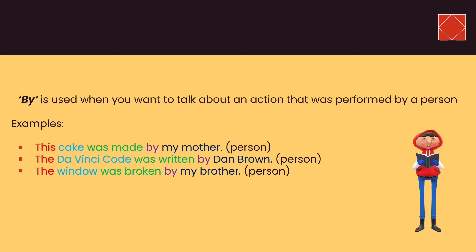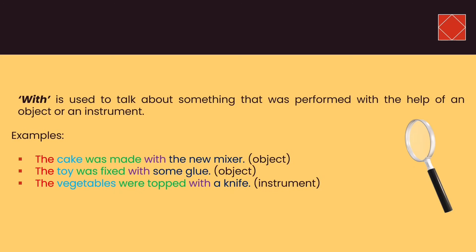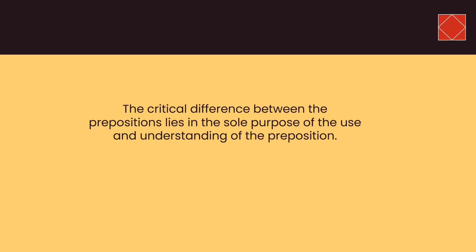'The Da Vinci Code was written by Dan Brown.' 'The window was broken by my brother.' As you can notice, the action was performed by a person. 'With' is used to talk about something performed with the help of an object or an instrument. The examples here are performed by an object or an instrument. Always remember: use 'by' when talking about something done by a person, and 'with' when talking about something done by an object or instrument.